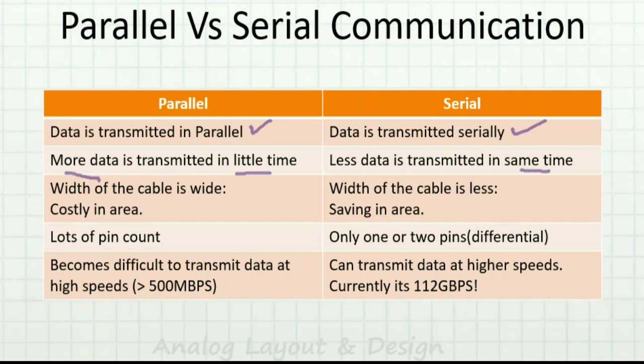The width of the cable in parallel communication is very large, which comes at a cost — the cost of area. We need wider area and there is routing congestion. In serial communication, I need very little area; the cable will have lesser width and that's how I save area.